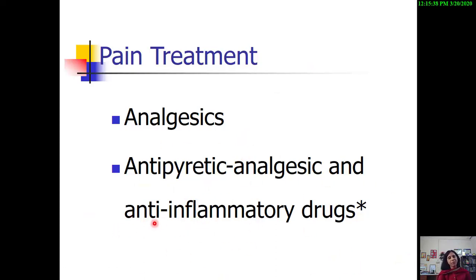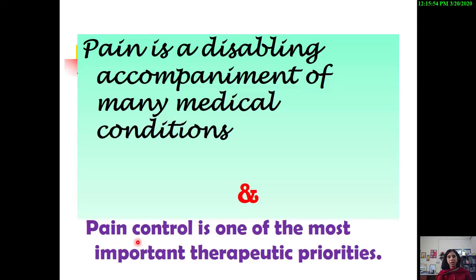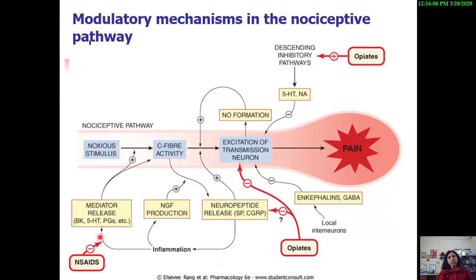The NSAIDs we are going to learn today have very good analgesic activity and a fairly decent to very nice anti-inflammatory activity, which makes these drugs very unique. Pain control is one of the most important therapeutic priorities of the physician. This is the nociceptive pathway — the ascending nociceptive pathways and the descending inhibitory pathways. NSAIDs are peripheral pain relievers; they do not act at the spinal or supraspinal level where the opiates act.